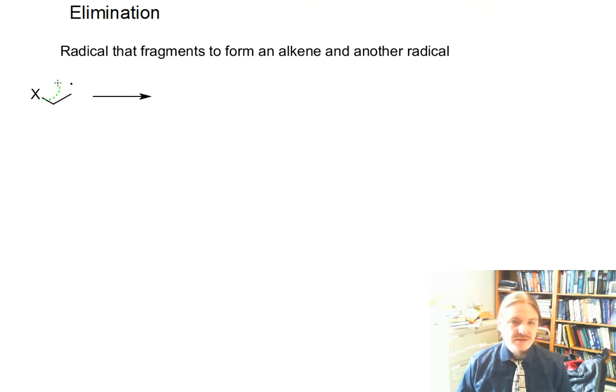So what this looks like is if the halogen were to fall off and the other electron in the carbon-halogen bond could meet up with this unpaired electron on the carbon atom, we would get an alkene and a halogen radical or whatever other thing that just fell off.